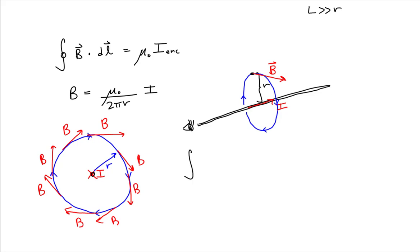We can rewrite Ampere's Law as the line integral of the dot product between the magnetic field and a small displacement DL of our Ampere loop. A segment of the loop DL is also tangent to the circle at every point, because I chose a shape that matches the symmetry of the magnetic field. Because the Ampere loop matches the symmetry of the magnetic field, this will make the integration rather simple.